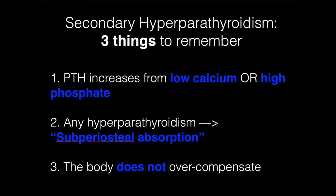Third, the body typically does not overcompensate — this is important for understanding acid-base derangements and it's really critical here. So if we have low calcium or high phosphate, PTH will try to fix those abnormalities and make them less deranged, but PTH isn't going to overcorrect hypocalcemia into hypercalcemia. If a patient just has low calcium and PTH comes in to rescue it, they're still going to have low calcium after PTH compensates — it just won't be completely fixed.